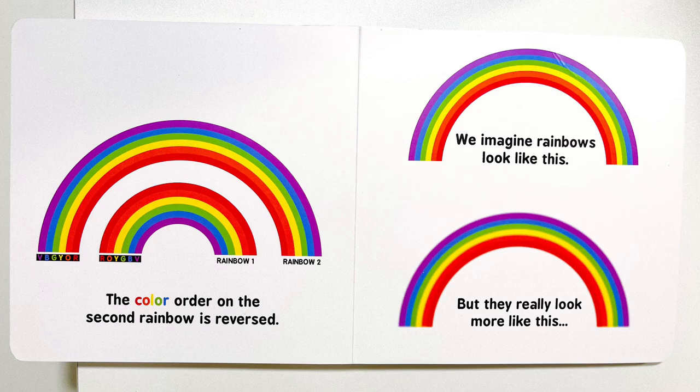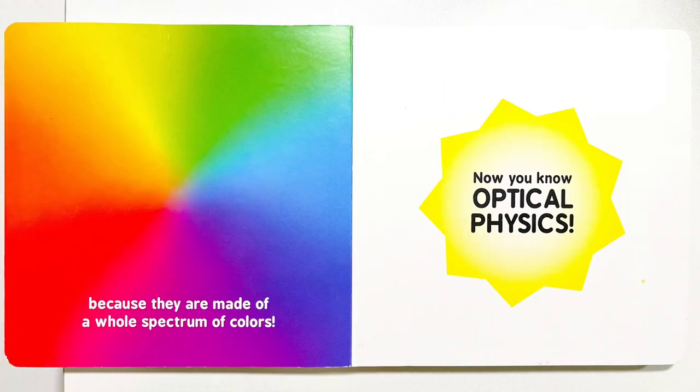We imagine rainbows look like this, but they really look more like this, because they are made of a whole spectrum of colors. Now you know optical physics.